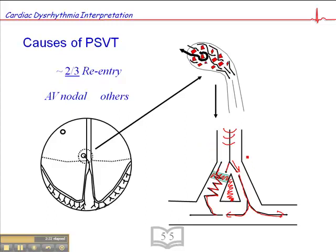If this happens in sequence — time and time again, over and over — it gives rise to a re-entrant tachycardia. This is what we see in paroxysmal supraventricular tachycardia. Two-thirds of these are the result of re-entry at the AV node.